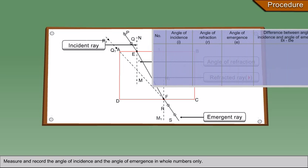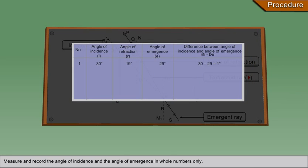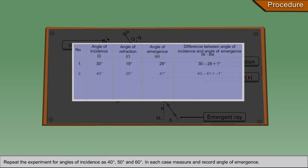Measure and record the angle of incidence and the angle of emergence in whole numbers only. Repeat the experiment for angles of incidence as 40 degrees.